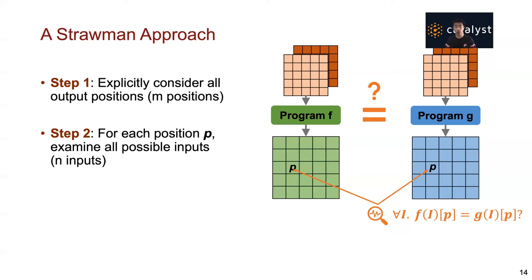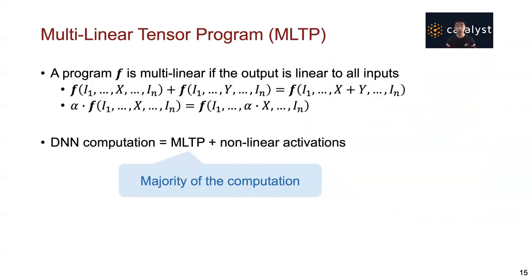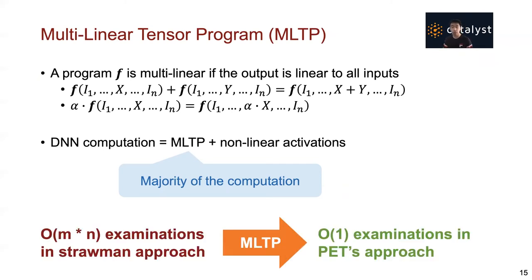This requires all m times n examinations where m and n are the number of output positions and the number of possible inputs, but both are too large to explicitly enumerate. To reduce the examination complexity, PAT leverages the specific property of deep learning called multilinearity. We say a program f is a multilinear tensor program (MLTP) if the output is linear to all inputs. Today's deep learning computation consists of multilinear tensor programs and non-linear activations, and multilinear tensor programs consume the vast majority of overall computation time. By exploiting multilinearity, PAT can reduce the examination complexity from O(m × n) to a small constant number of examinations.